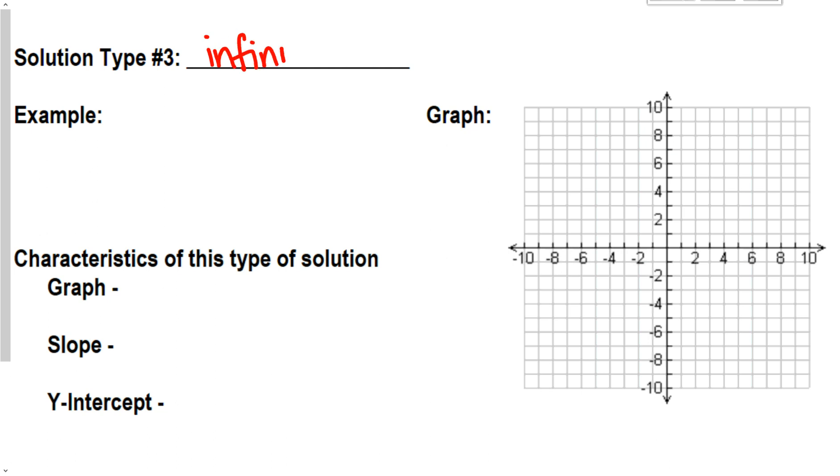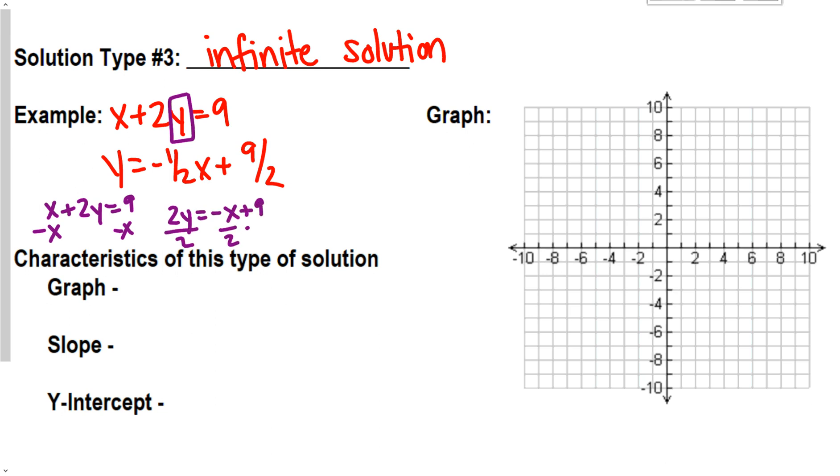Last one is going to be infinite solution. Our example is x plus 2y equals 9 and y equals negative one-half x plus 9 over 2. To graph, remember to graph this guy, I need to get y by itself. So, I got to do some work. I got to take this equation and get y alone. So, I minus x from each side. 2y equals negative x plus 9. Divide everything by 2. y equals negative one-half x plus 9 over 2. Now, I'm going to stop at this point because we should notice something. We should notice that this equation just became the exact same as this equation.